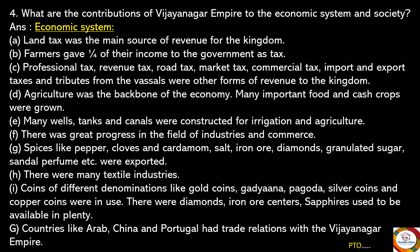There was great progress in the field of industries and commerce. Spices like pepper, cloves, and cardamom, as well as salt, iron ore, diamonds, granulated sugar, sandal, and perfume were exported. There were many textile industries. Coins of different denominations — gold coins, Gadayana, Pagoda, silver coins, and copper coins — were in use. Sapphires were available in plenty. Countries like Arabia, China, and Portugal had trade relations with the Vijayanagara Empire.